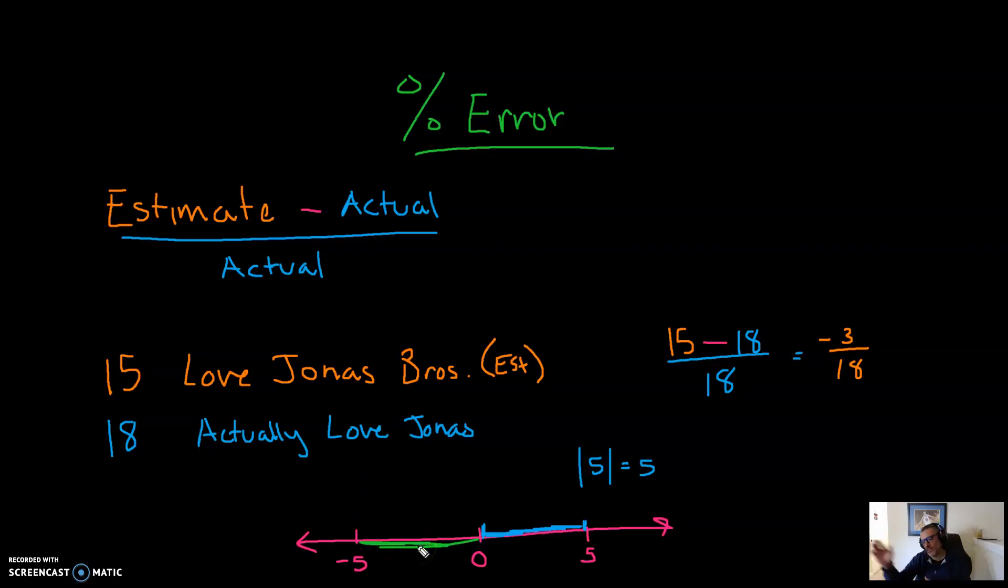We don't measure distance in negative numbers, right? You don't say I walked five miles north, turned around and walked negative five miles south. It's just, you walked five miles north and then you walked five miles south. So we say the absolute value of negative five is also equal to five, right? This line is five units long and this line is five units long. So if you end up with a negative up here, you're just going to take the absolute value of it. So I'm just going to take the absolute value of it.